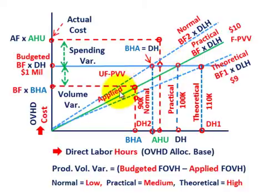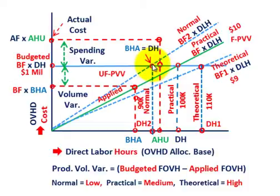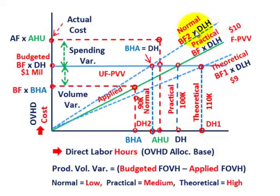You have to choose the proper level and determine what you think that plant can operate at. Whatever level you choose, you want what you're allocating based on direct labor hours at whatever rate to equal your fixed overhead cost at that particular allocation rate. The choice of different denominator hours gives you a choice of different allocation rates — looking at normal, practical, and theoretical amounts.